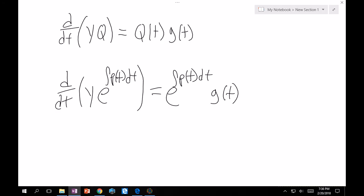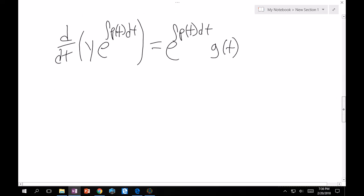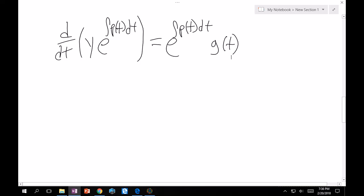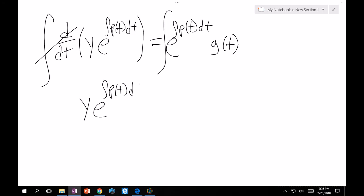Now, again, this has a derivative with respect to t on the left hand side. So this is practically begging me to just integrate both sides, which I will. So integrating the left and the right in this class, derivative and an integral, they just go away. So y e to the integral of p(t) dt is equal to the integral of this.